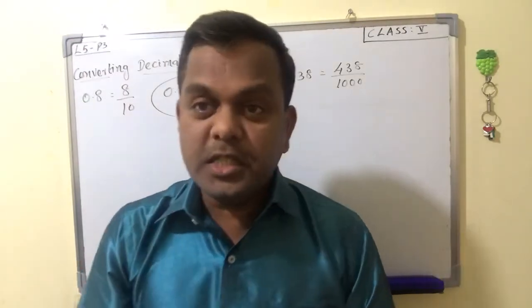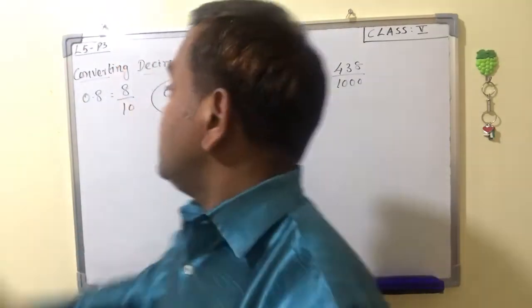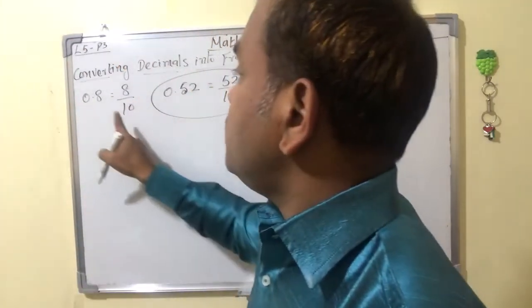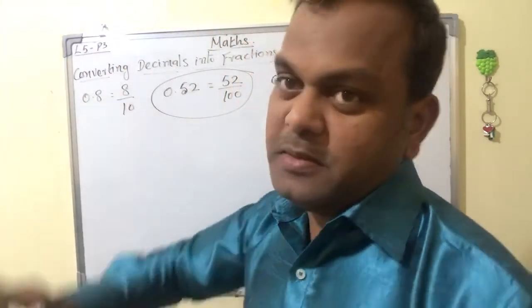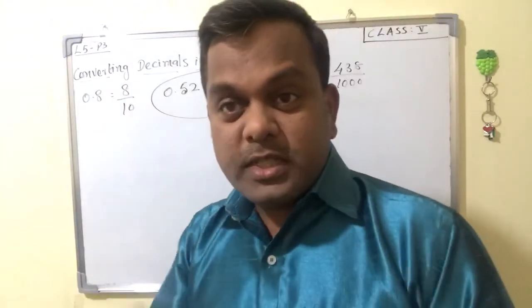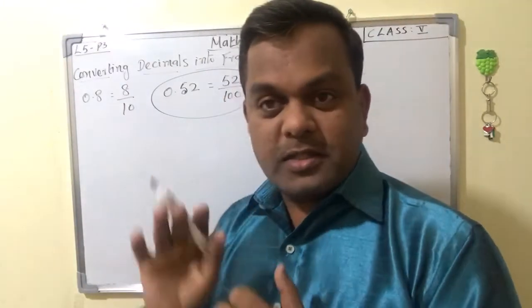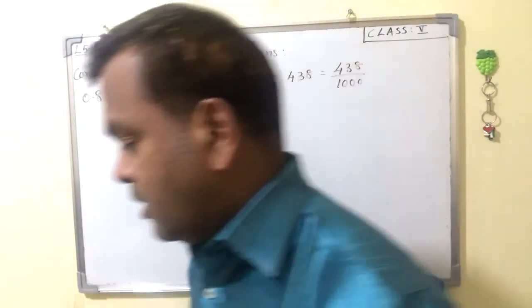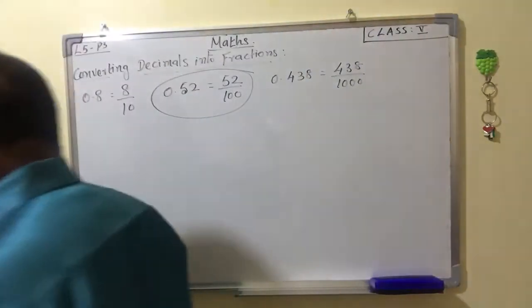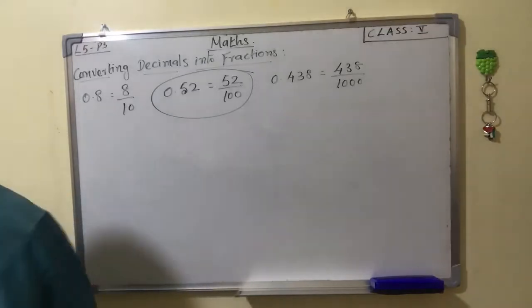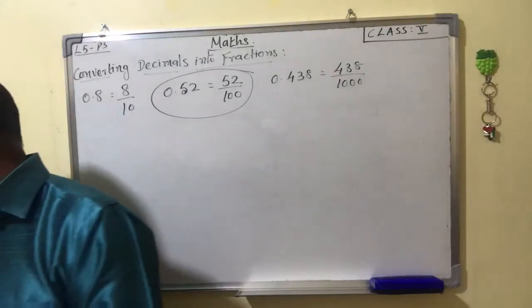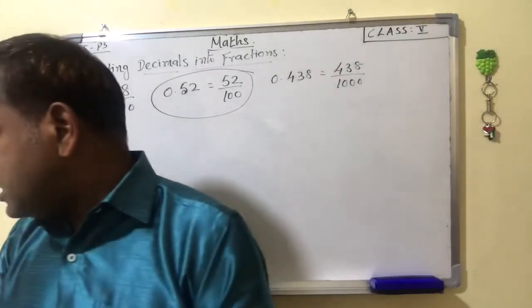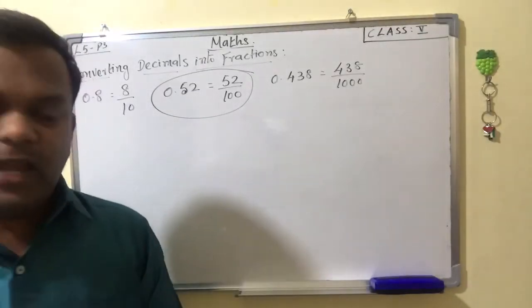So this is very easy to convert decimal to fraction. Just follow this: write the decimal number without the decimal point as the numerator of the fraction.